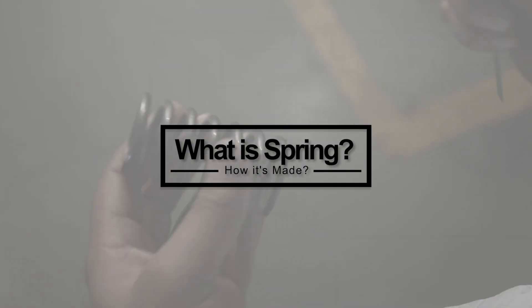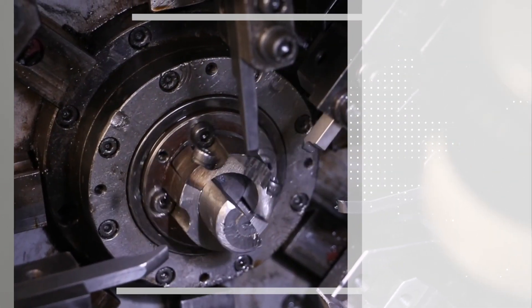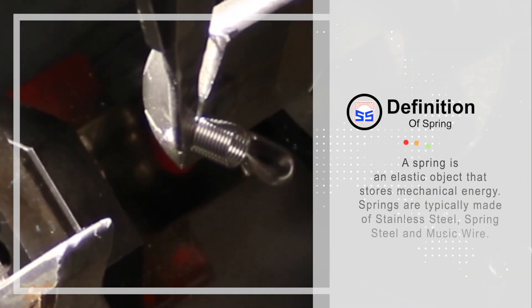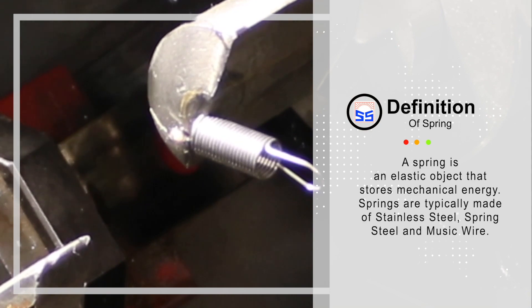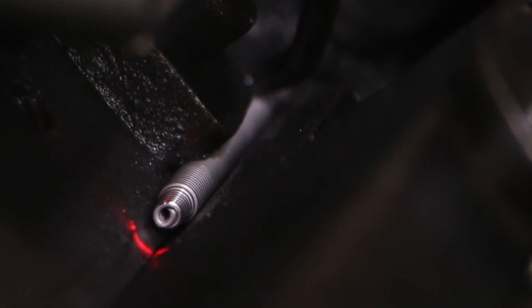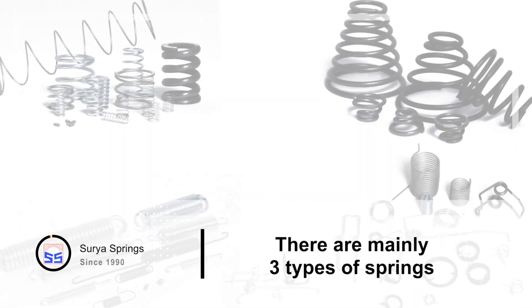Hello, in this video we will learn what a spring is and how it is made. A spring is an elastic object that stores mechanical energy. Springs are typically made of stainless steel, spring steel, and music wire.